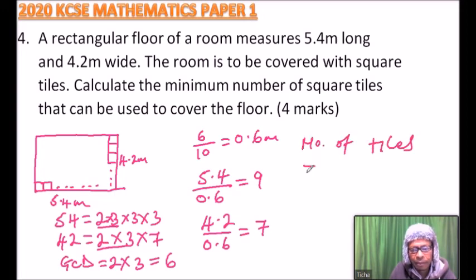The number of tiles would be 9 multiplied by 7, which gives 63 tiles. So the minimum number of tiles needed is 63. That is how you solve this problem.